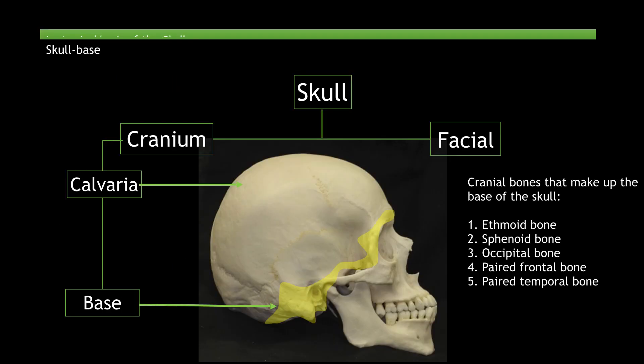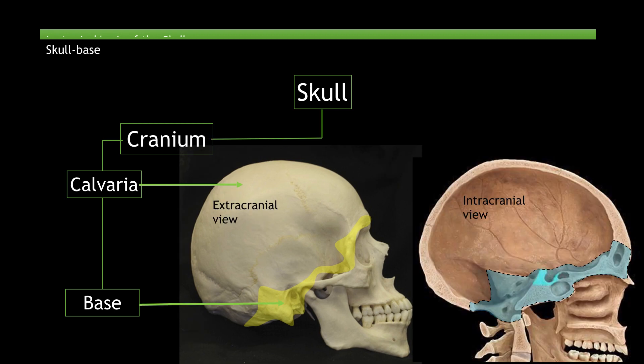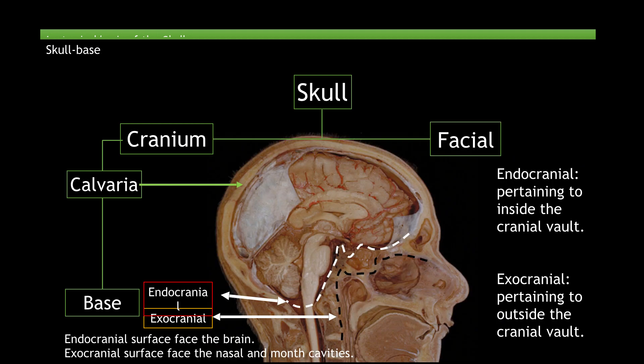Here is a visual of the skull base highlighted in yellow. Five bones make up the base of the skull, which include the ethmoid, sphenoid, occipital, parietal, frontal, and temporal bones. Shown here are the extracranial and intracranial views of the skull. The two lines highlighted in red and yellow represent the endocranial and exocranial surfaces respectively. The endocranial surface faces the brain while the exocranial surface faces the nasal and mouth cavities.